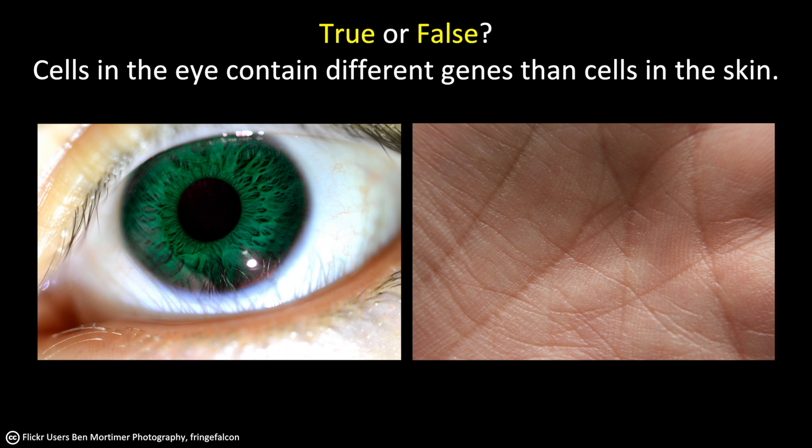Let's begin this lecture with a question. True or false? Cells in the eye, let's say the light sensing rods and cones for example, contain different genes than cells in the skin like keratinocytes.